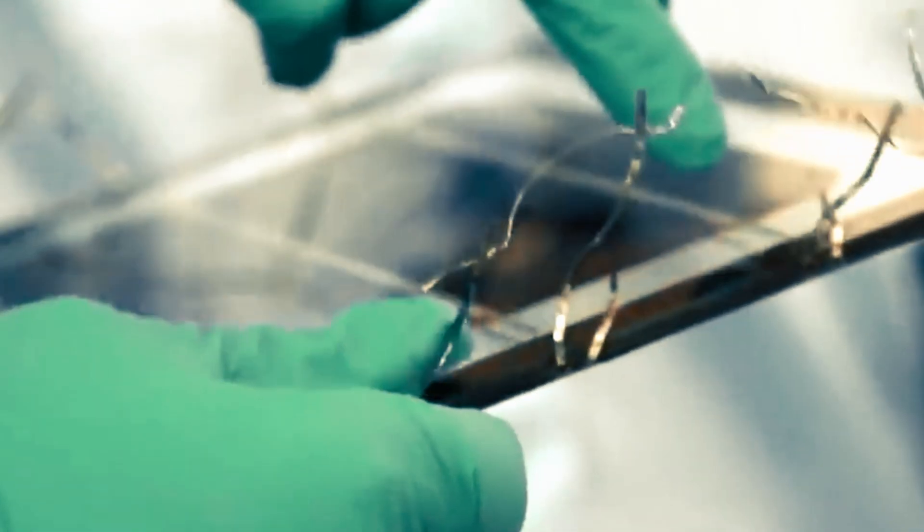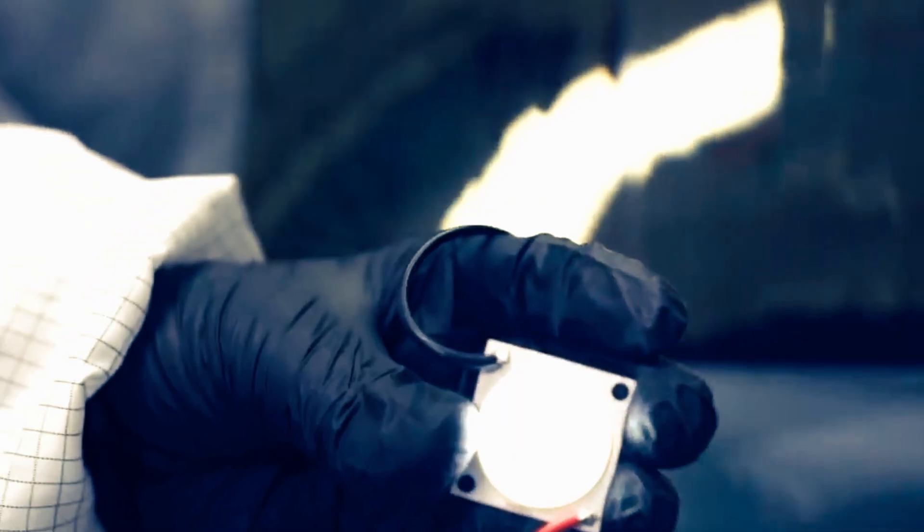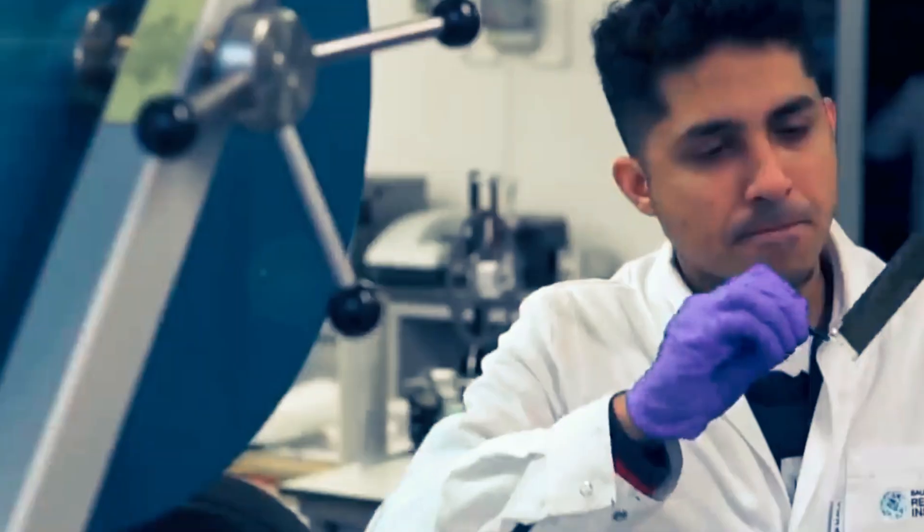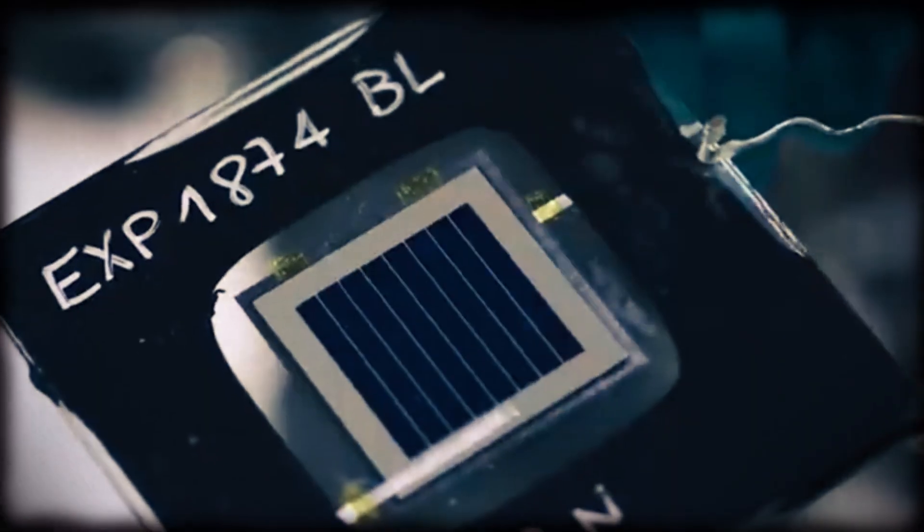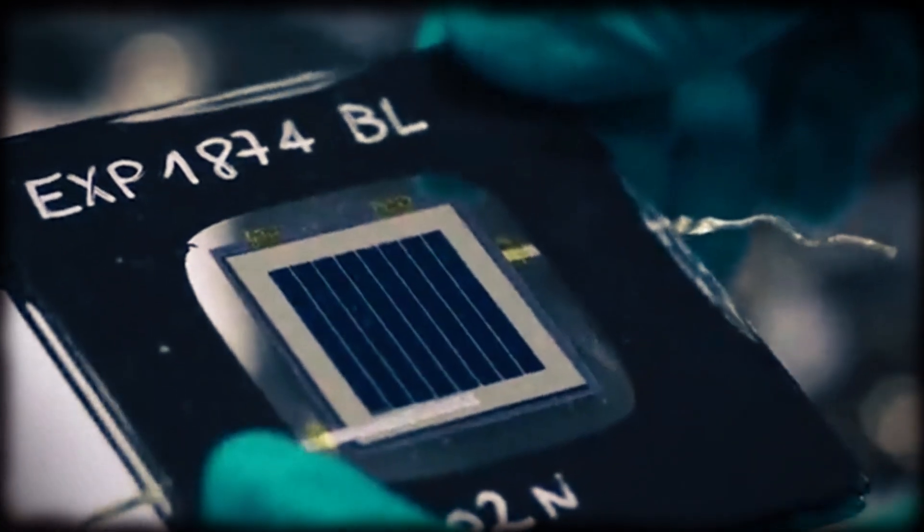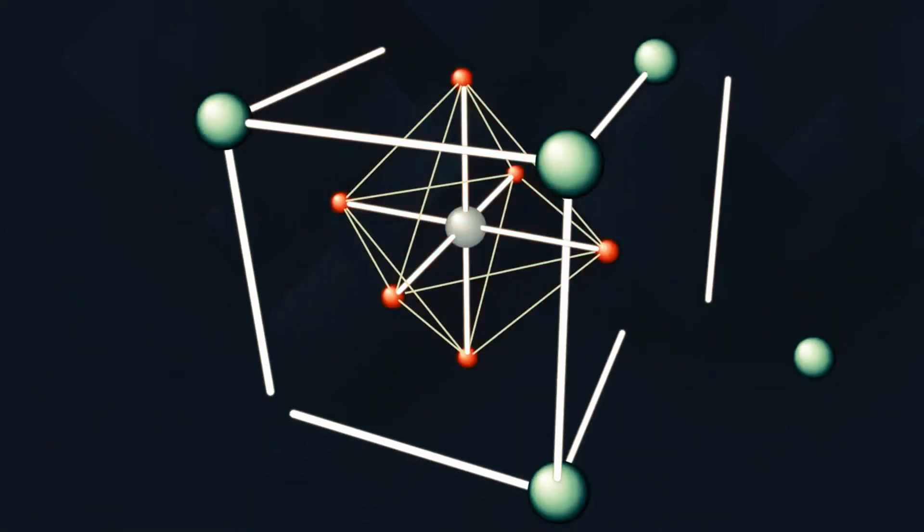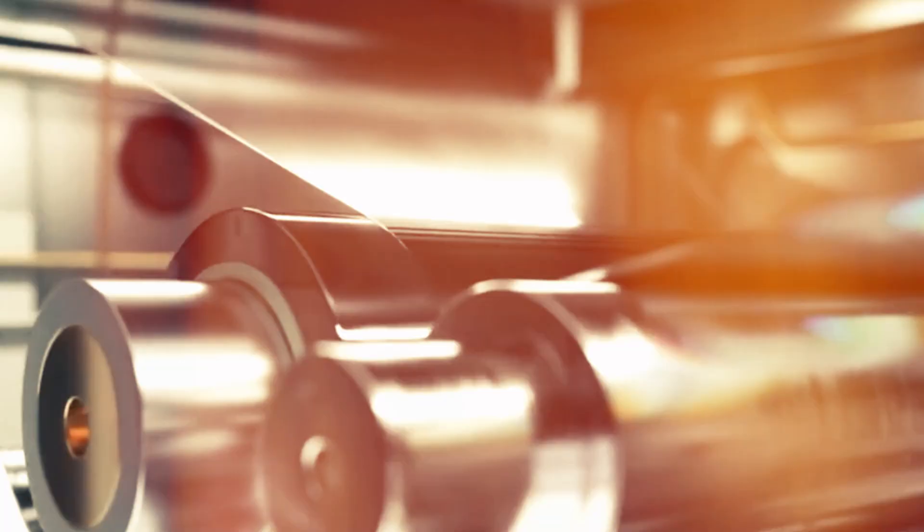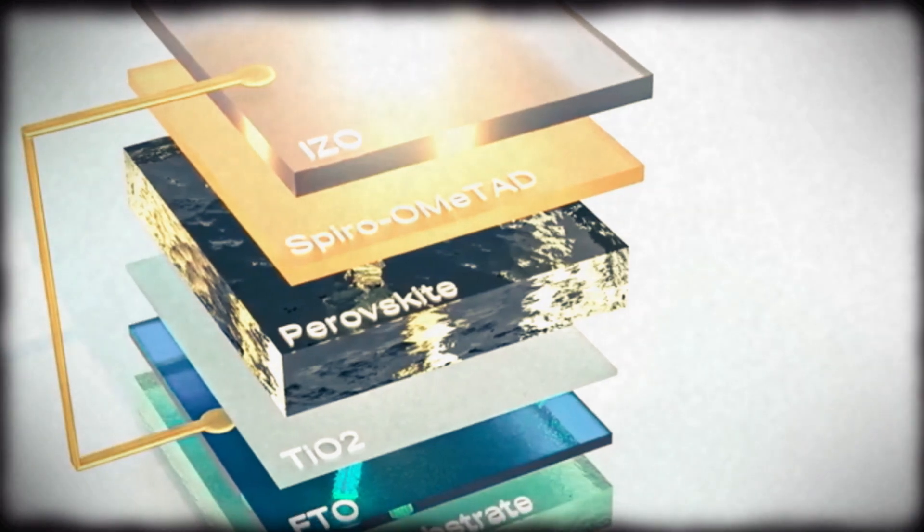Perovskite solar cells face a tough challenge when it comes to their long-term stability and durability, especially when they encounter moisture, heat, or light. Progress has been quite remarkable in improving the stability of perovskite materials. This has been achieved through the advancement of encapsulation techniques, interface engineering, and material formulations. By using additives, passivation layers, and interface modifiers, researchers have discovered effective strategies to enhance the durability of perovskite solar cells against degradation mechanisms. Addressing stability issues is crucial for enhancing the commercial potential and longevity of perovskite solar panels, which will likely boost their usage in the renewable energy sector.